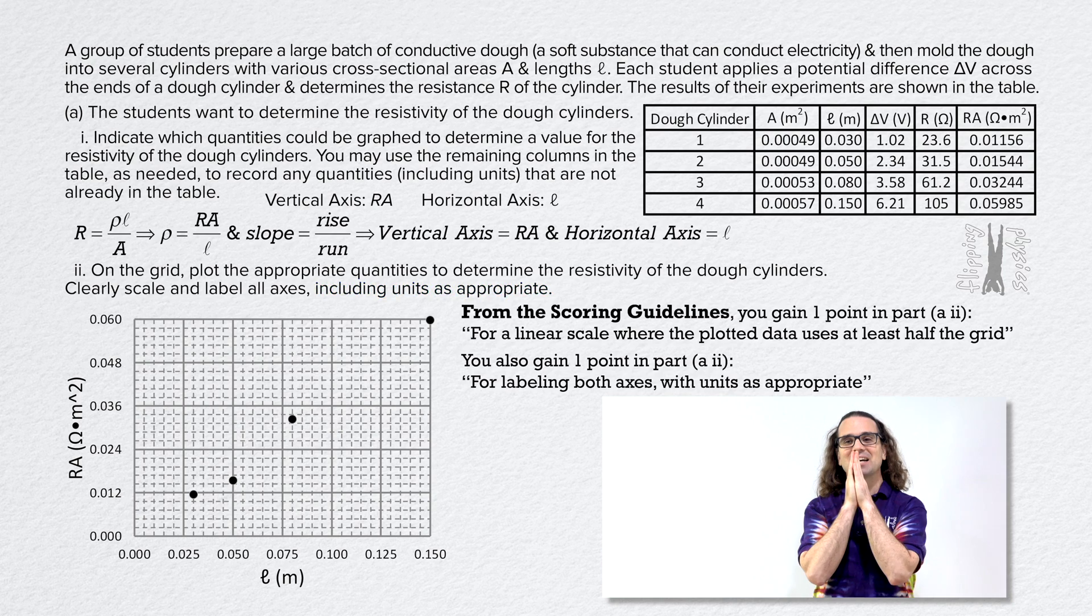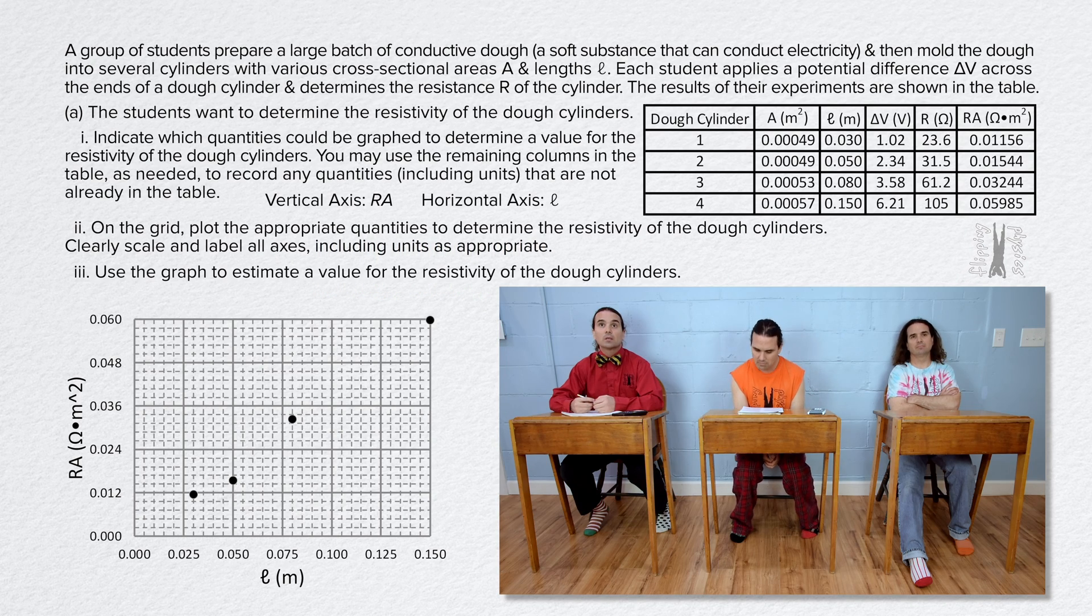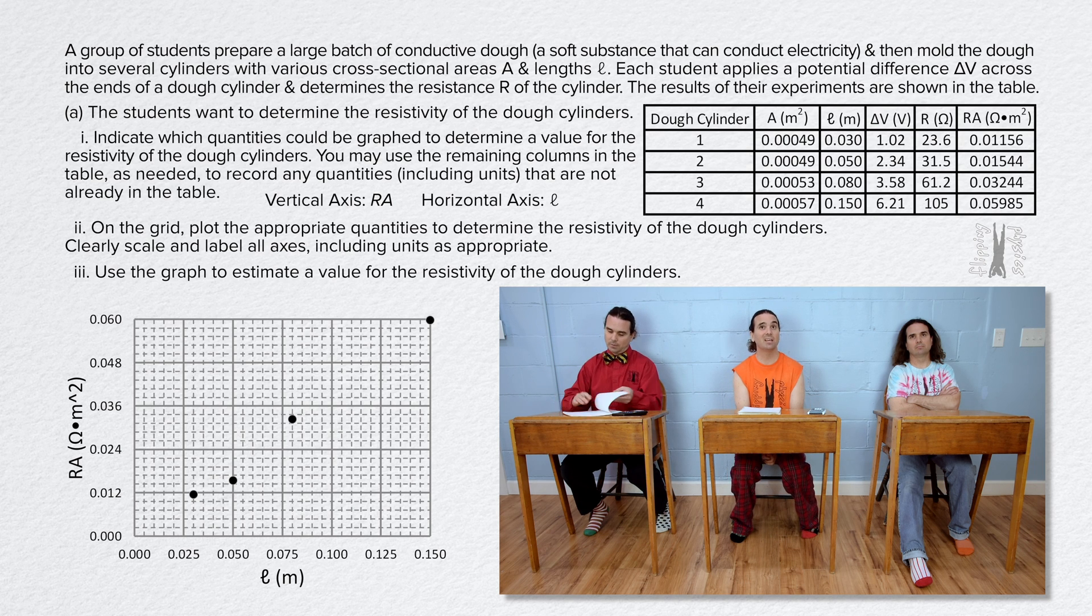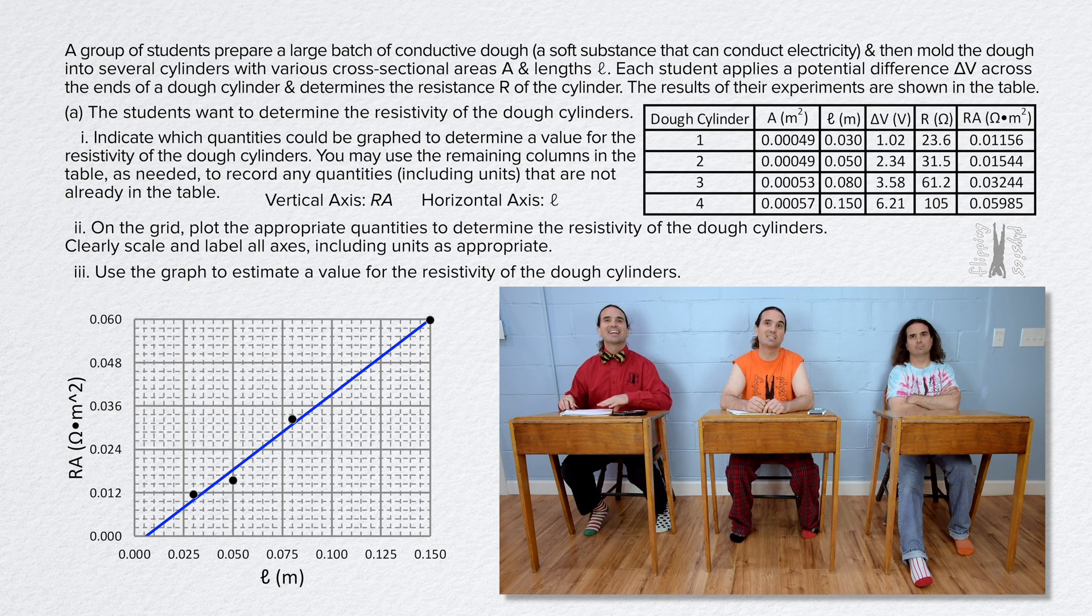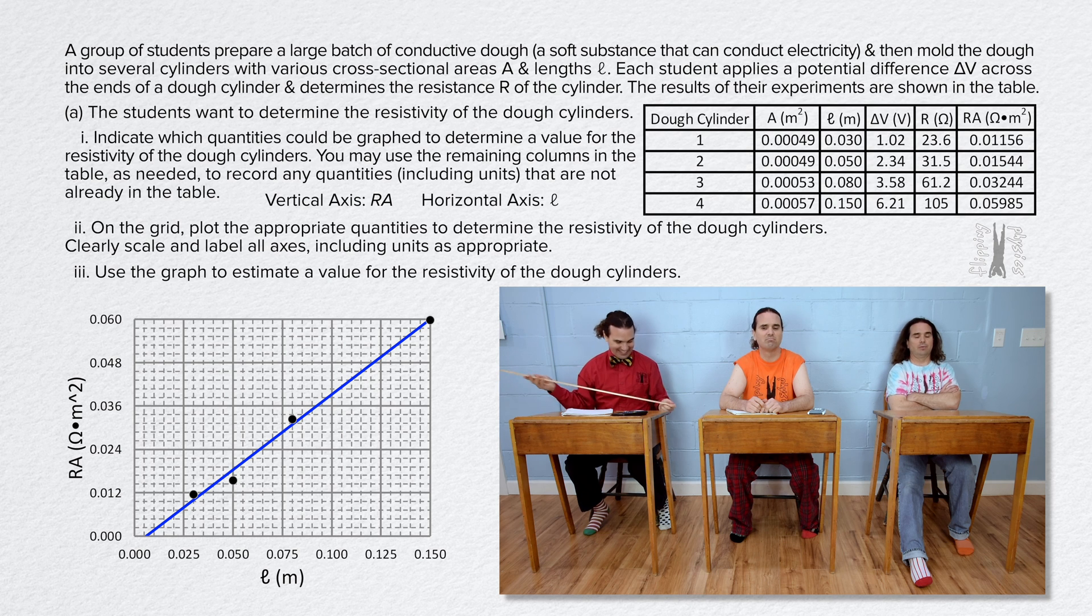Okay Mr. P. Bobby, please read and answer part AIII. Okay, part AIII. Use the graph to estimate a value for the resistivity of the dough cylinders. As Bo pointed out, the slope of the best fit line of this data is the resistivity of the conductive dough. So, all we need to do is add a best fit line. I guess that is why it suggests we bring a ruler or straight edge if taking an AP physics exam. Oh, I brought my straight edge.